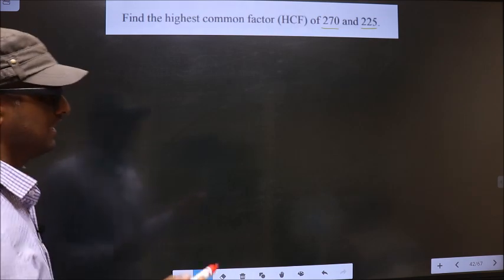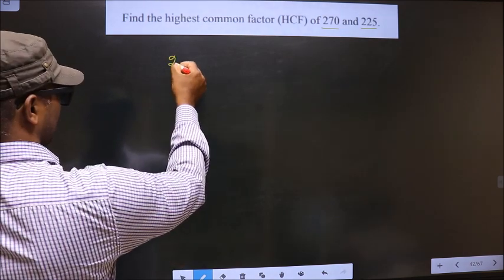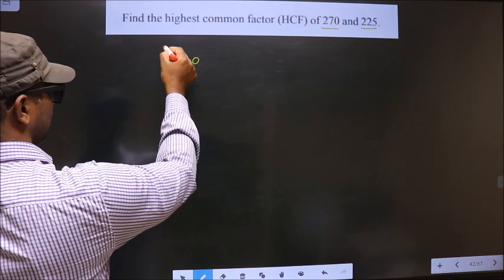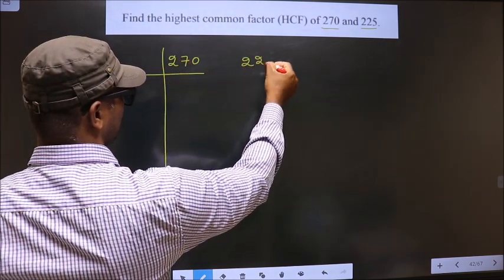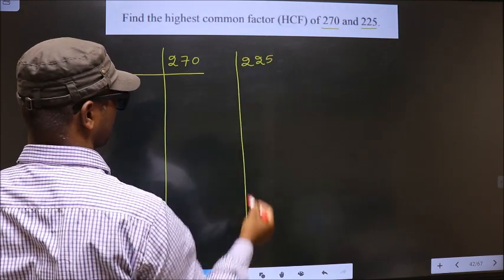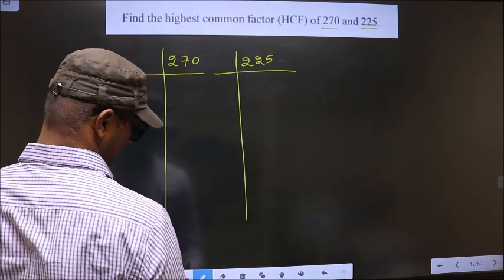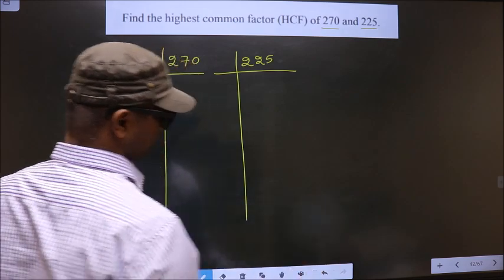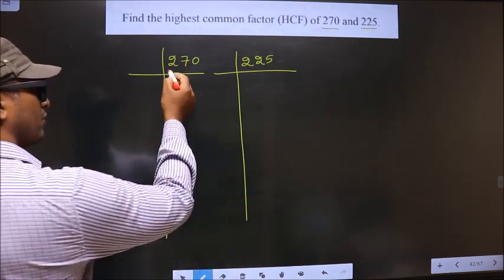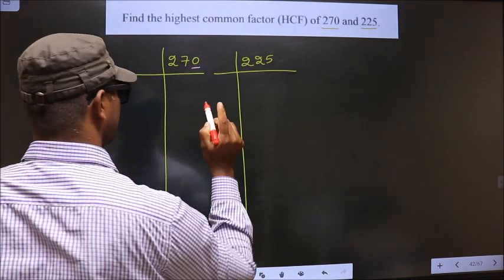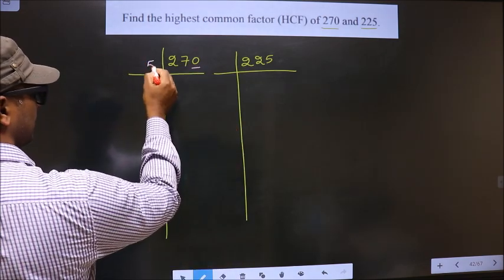That is, 270 and 225. For this number, the last digit is 0, so we take 5 here.